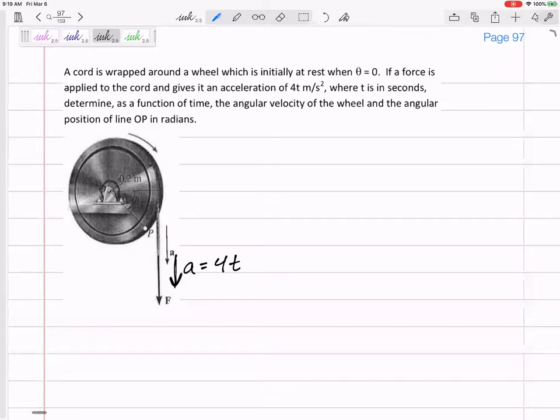Determine the angular velocity and the angular position of the line. Determine the angular velocity and the angular position. Well, this is an angular. This is not angular right here. That is the linear acceleration of the rope.